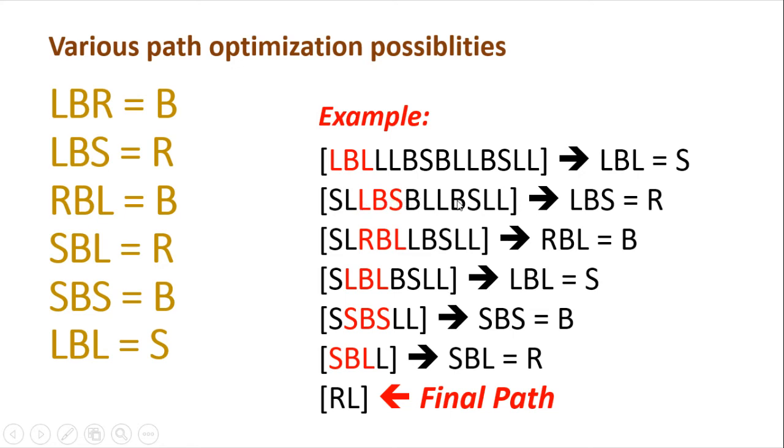So the next occurrence of XBX is LBS. LBS must be replaced with an R. So we have replaced LBS with an R, so that the LBS is replaced with an R, it now becomes RBL. Similarly, after replacing RBL with B and LBL with S and SBS with B and SBL with R, the final path that must be followed for following the optimized path by the robot is going to be R and L.